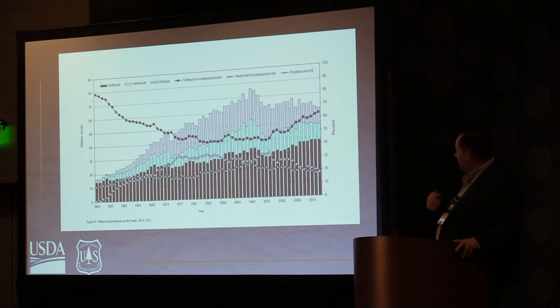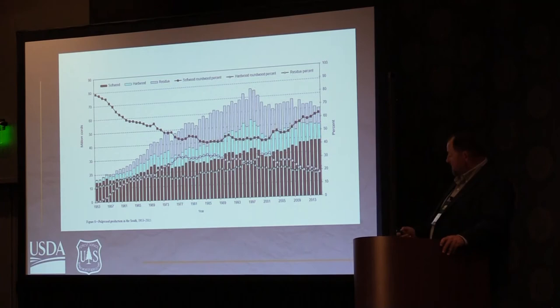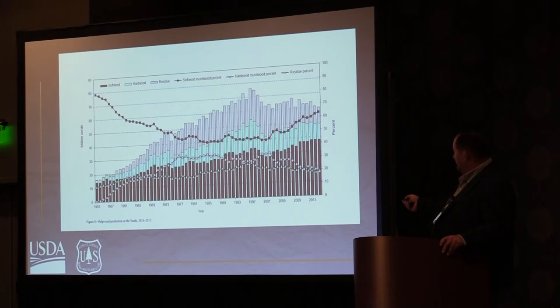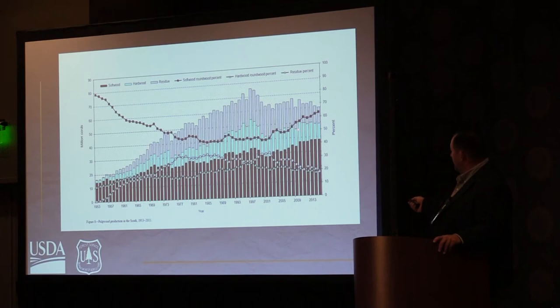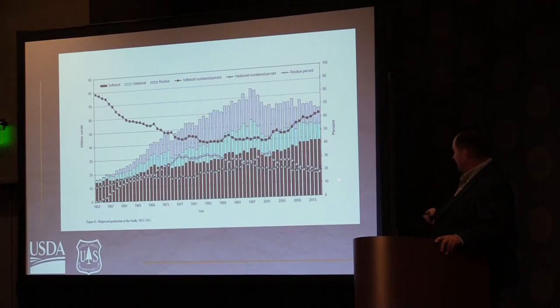Looking at pulpwood volume — it's a busy chart with a lot of data — the key thing to watch is the softwood output percent line and the hardwood output percent line. Although the total volume hasn't changed a lot, the softwood percentage is gaining while the hardwood percentage is staying the same or going down. The percent of residue coming from other mills is also trending down with the hardwoods, and those two factors probably work hand in hand as a direct result of one driving the other.